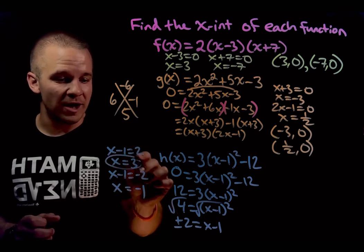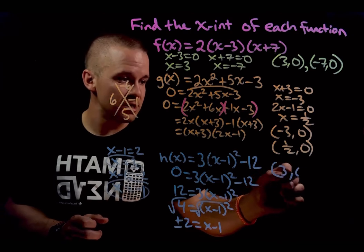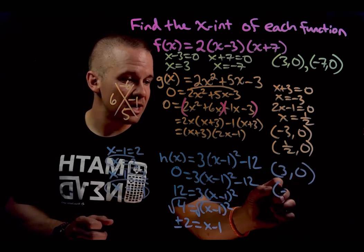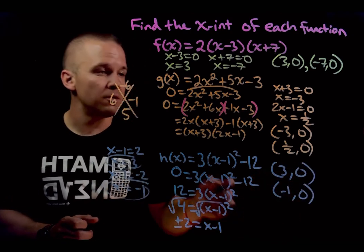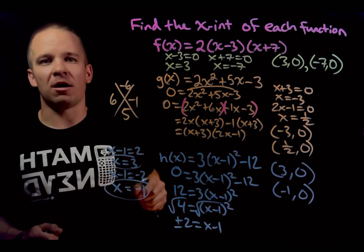So now with these two values right here and here, I'm going to have three comma zero and I'm going to have negative one comma zero for my two x-intercepts. Boom, boom, boom. That's what I'm talking about.